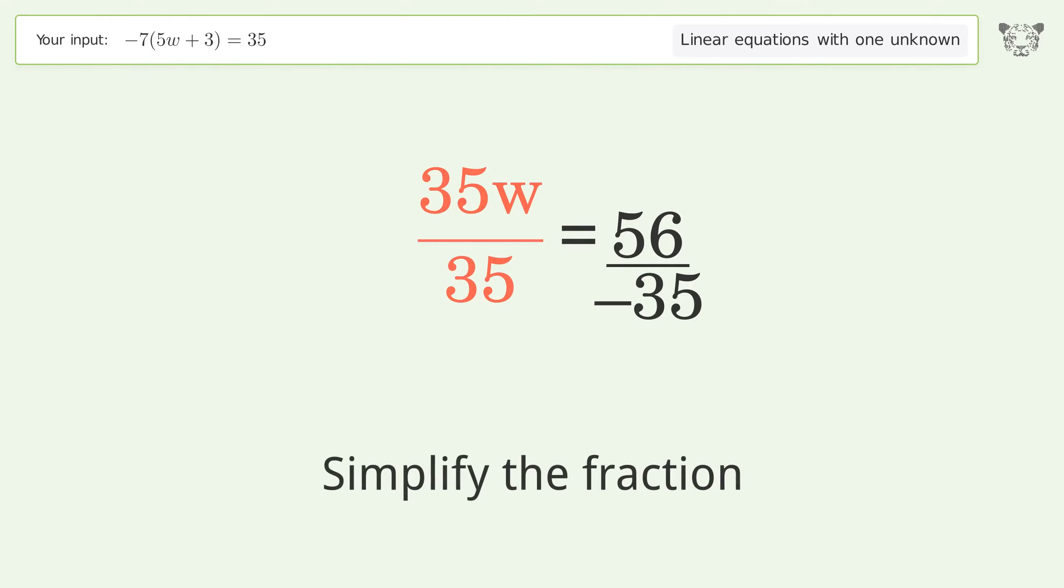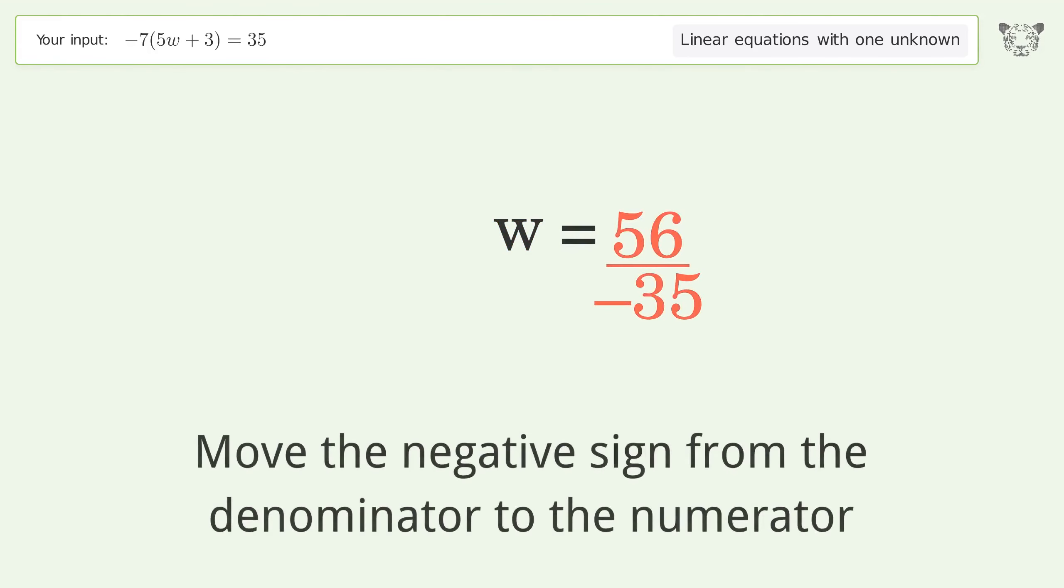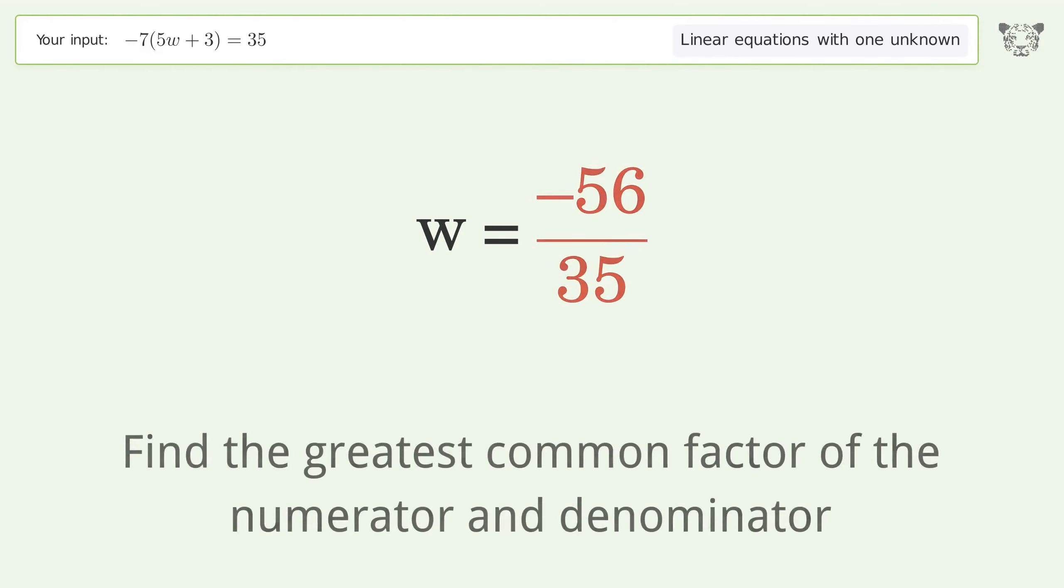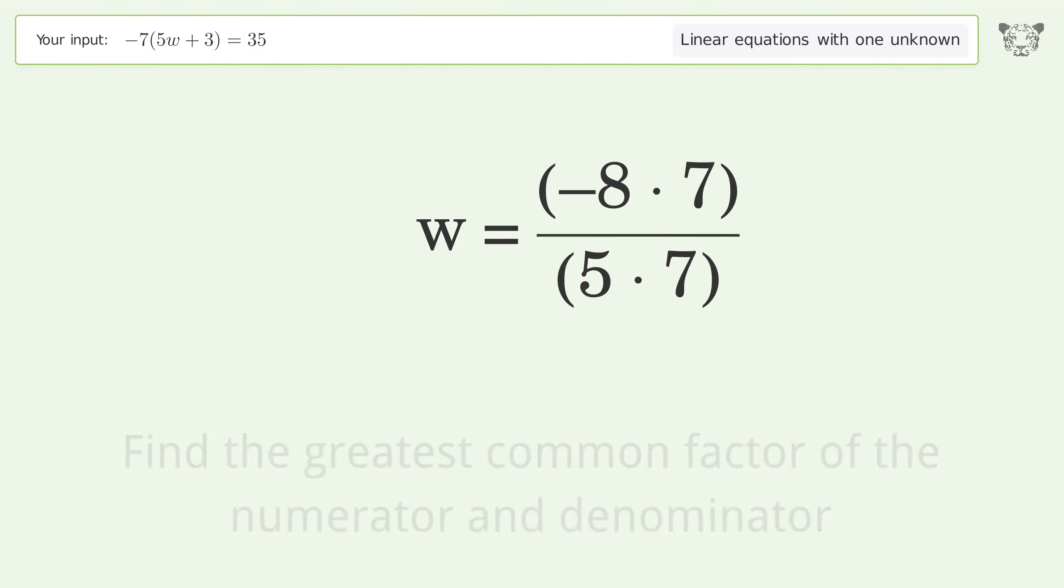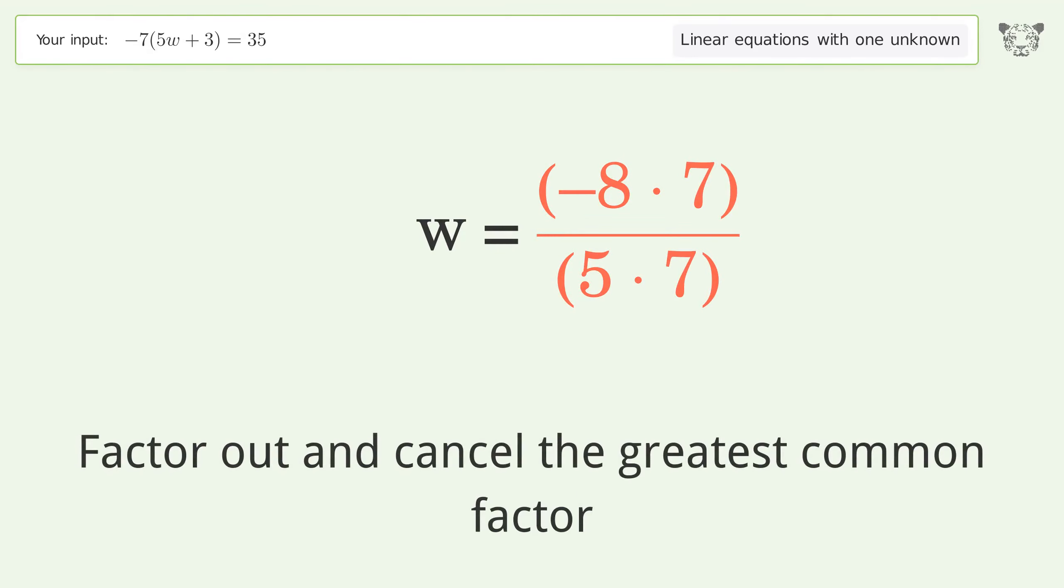Simplify the fraction. Move the negative sign from the denominator to the numerator. Find the greatest common factor of the numerator and denominator. Factor out and cancel the greatest common factor.